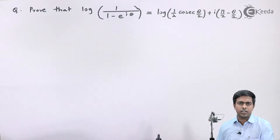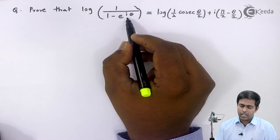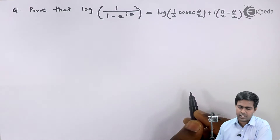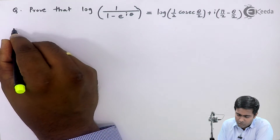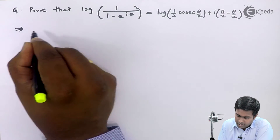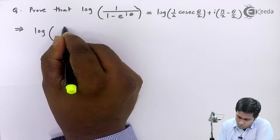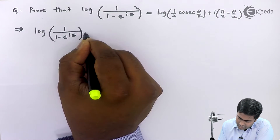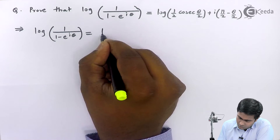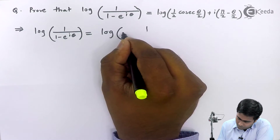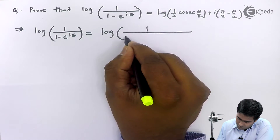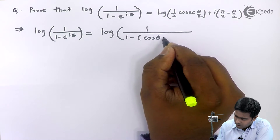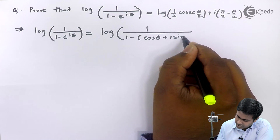We know that e raised to i-theta is cos(θ) plus i·sin(θ). Substituting this, we get log of 1 upon 1 minus cos(θ) plus i·sin(θ).